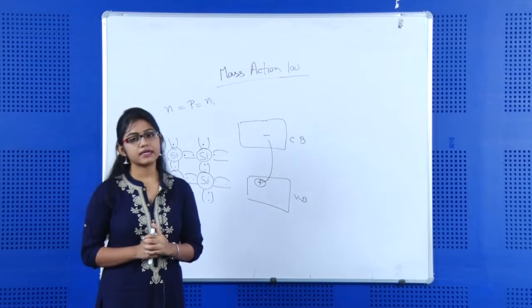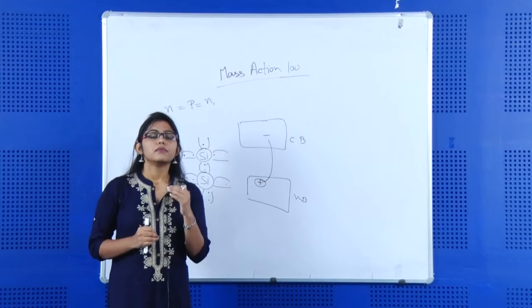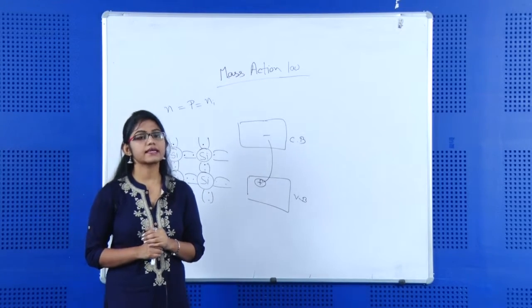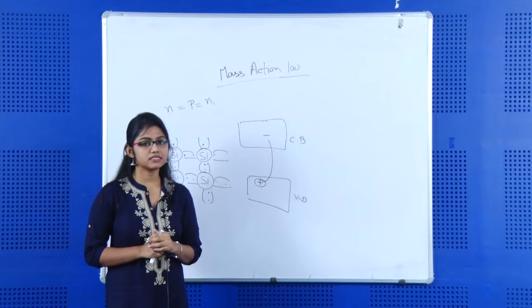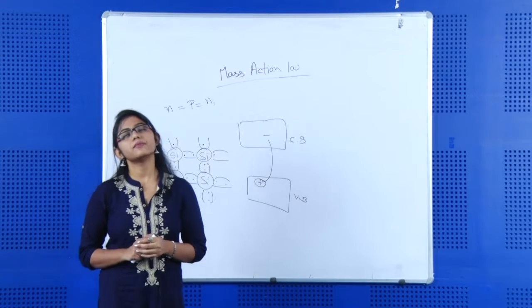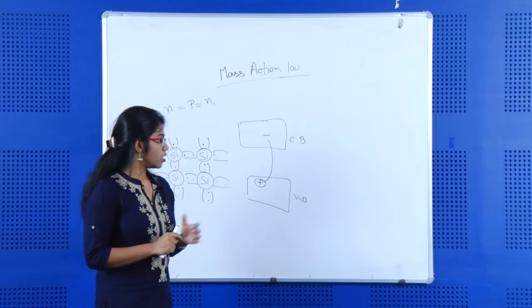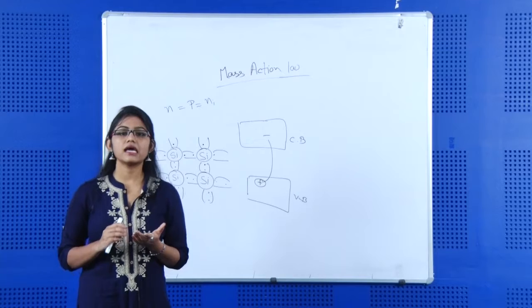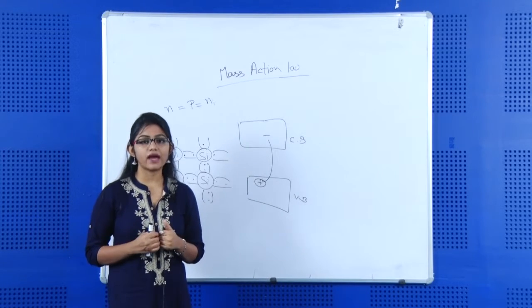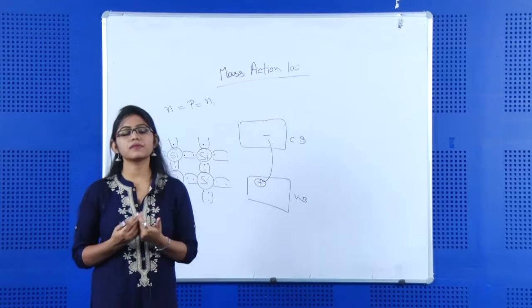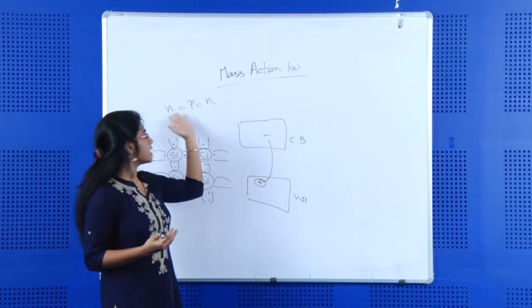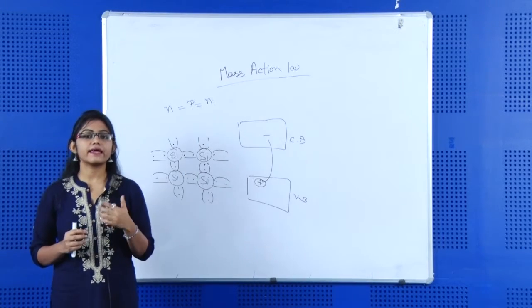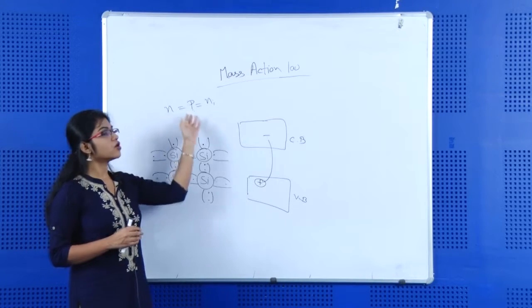In case of n-type semiconductor, the majority charge carrier will be electrons, and in case of p-type semiconductor, the majority charge carrier will be holes. So in case of an impure semiconductor, the hole concentration and the electron concentration will vary — unlike pure semiconductor where these two are equal, in n-type or p-type they are not equal.